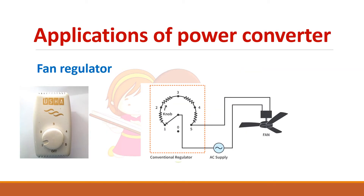The first application is a fan regulator. The older type of regulator is bulky and gets hot when the fan is running. The fan is basically an induction motor connected to the supply through this regulator, which is a series of resistors. At position five, full voltage appears across the fan for full speed. At positions two, three, or four, part of the voltage is dropped across the resistor and the remaining voltage appears across the fan, reducing the speed.